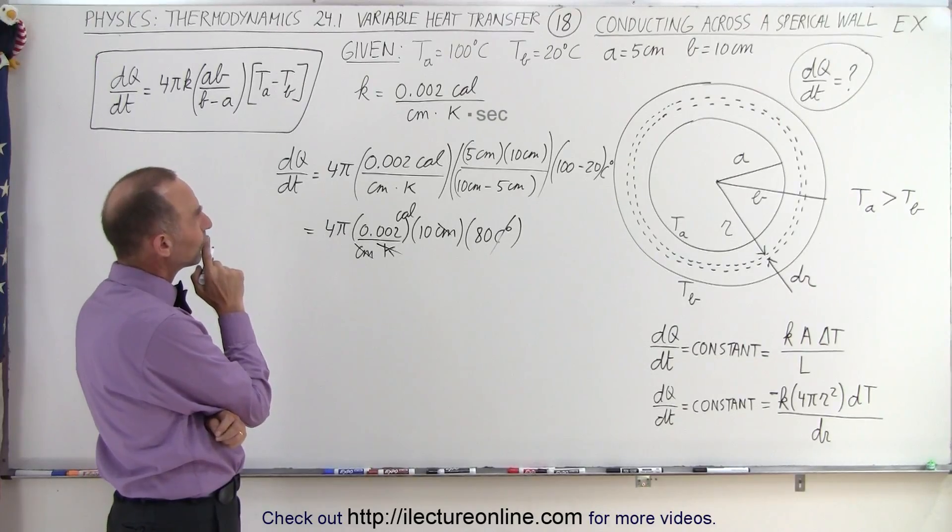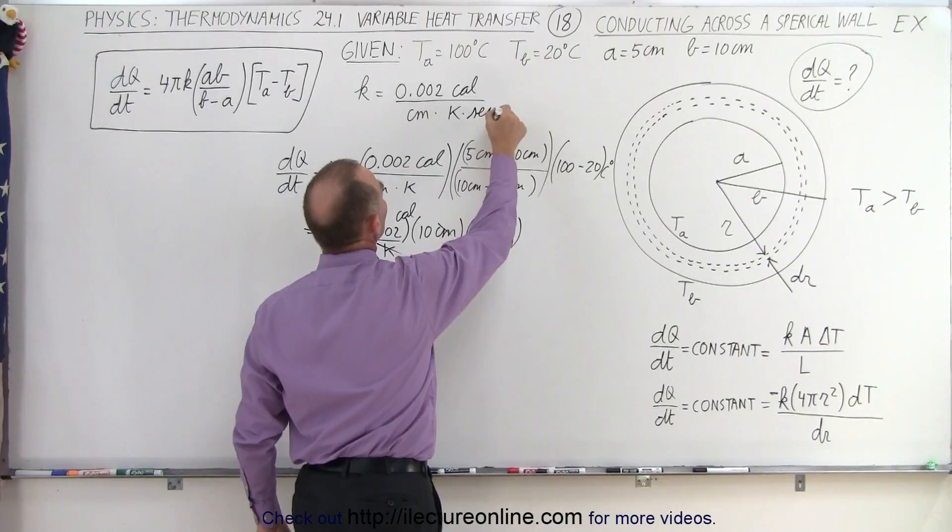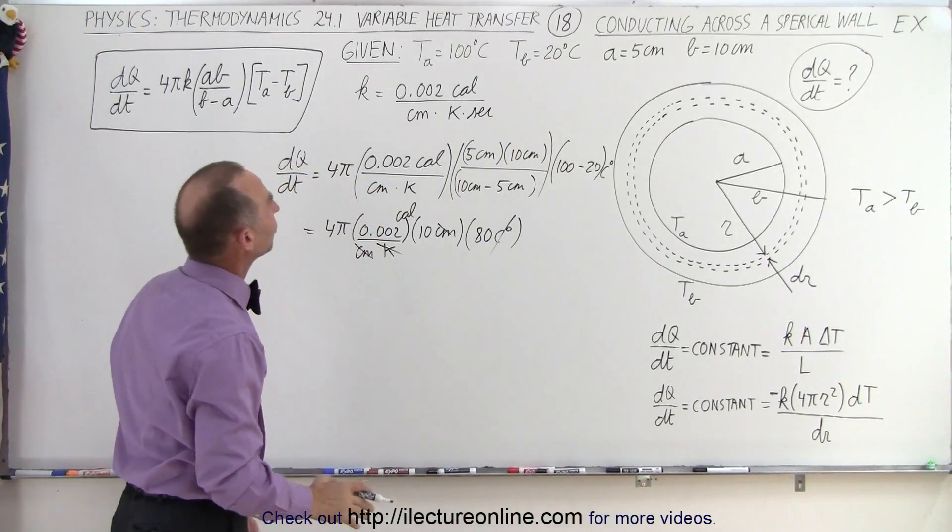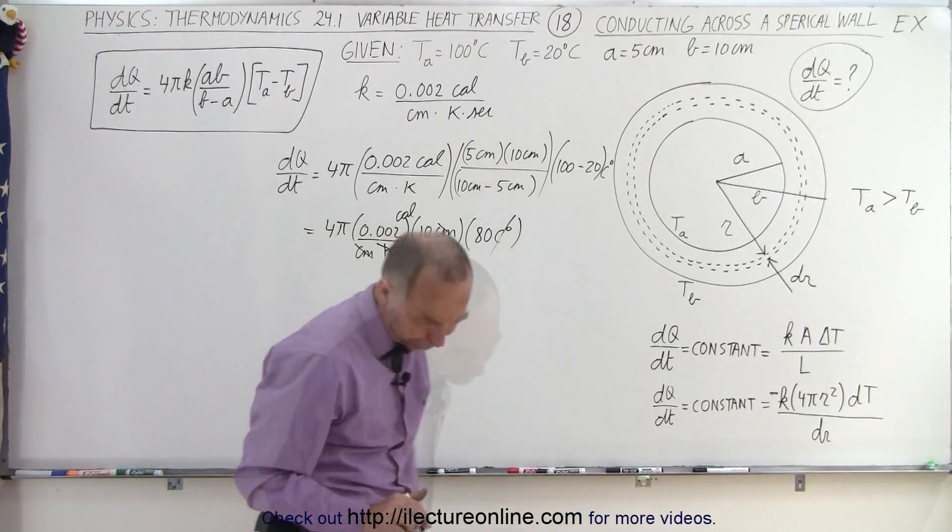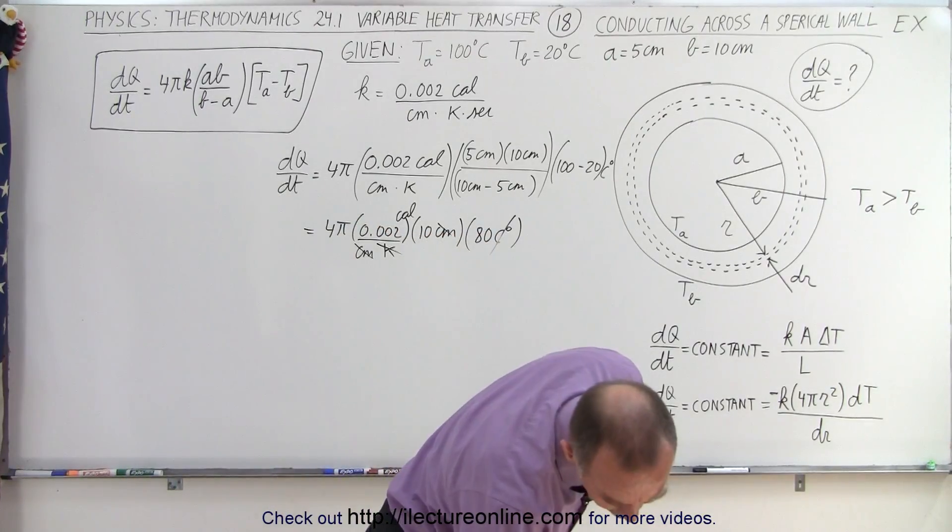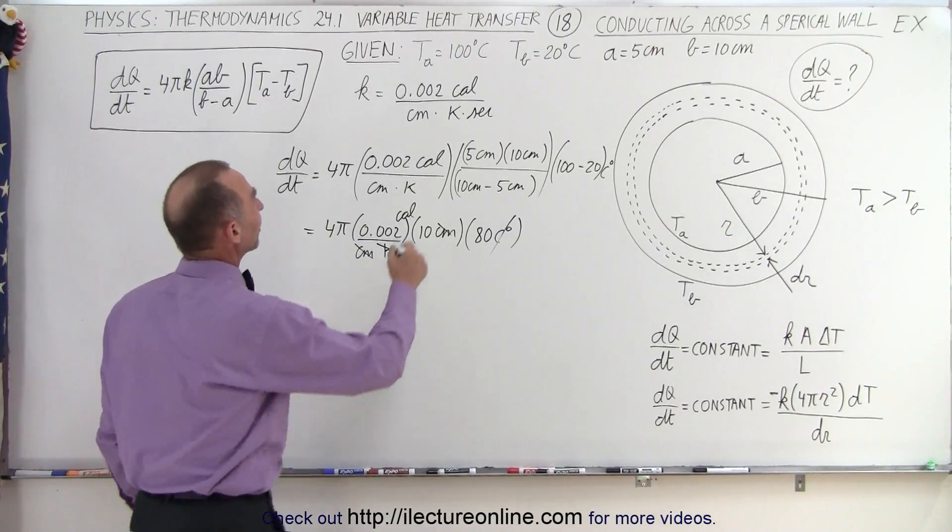And I think I'm missing something. I think I need per second right here. So calories per centigrade degree per second. Let me check on that. Joules per second, that's watts. It's calories per second, so that makes sense now.